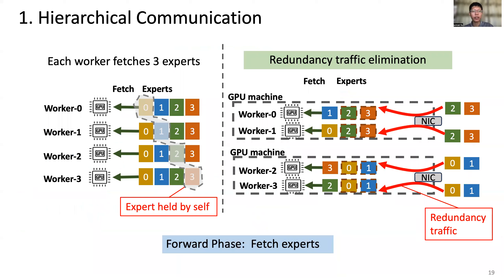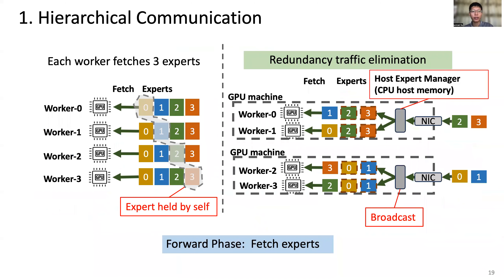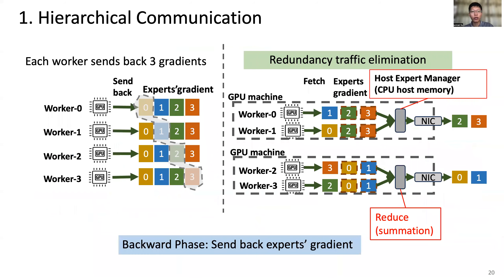The first design is hierarchical communication. JANUS designs an expert manager residing in host memory. Each machine only fetches one copy of outside experts per iteration and caches them in CPU host memory. Then the manager broadcasts the experts to each GPU. In the backward phase, each worker sends back gradients to the original worker of each expert. The expert manager caches these gradients, reduces gradients of the same experts, and only the summation result of gradients is sent back. In this way, cross-machine traffic is greatly reduced.